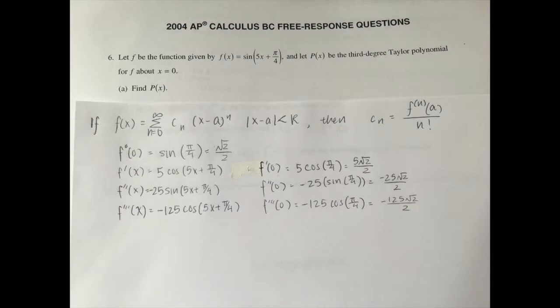To find p of x, we'll start off by finding f of 0, the first derivative f of 0, the second derivative of f at 0, and the third derivative of f at 0. They would equal square root of 2 over 2, 5 square root of 2 over 2, negative 25 square root of 2 over 2, and negative 125 square root of 2 over 2, respectively.